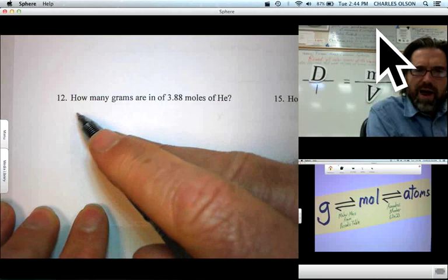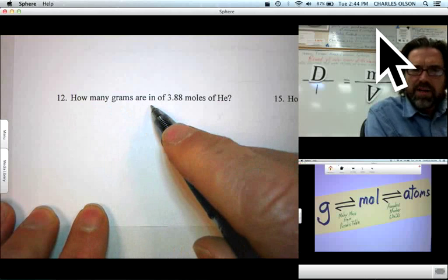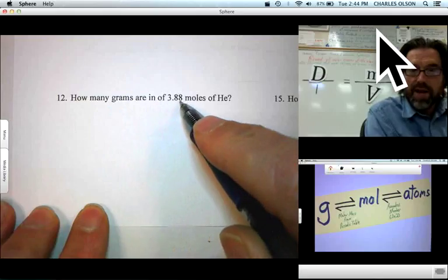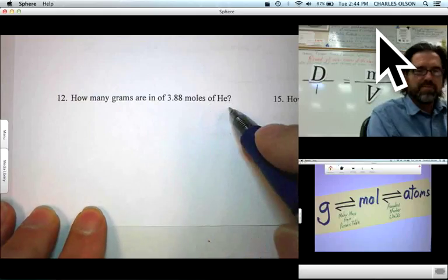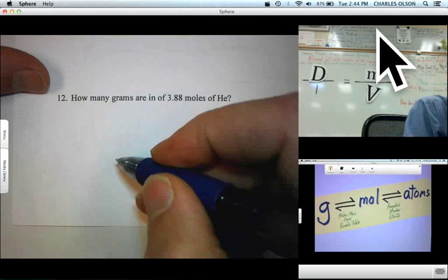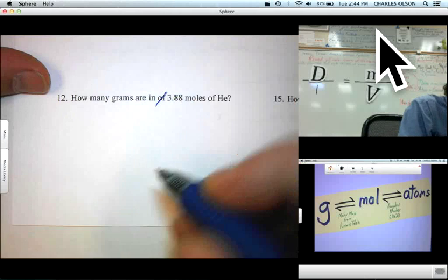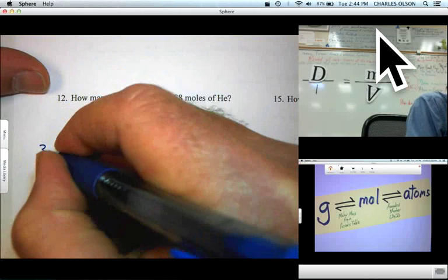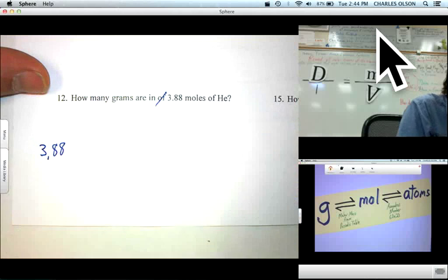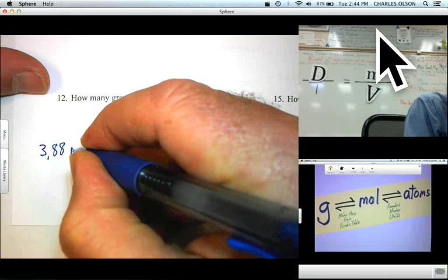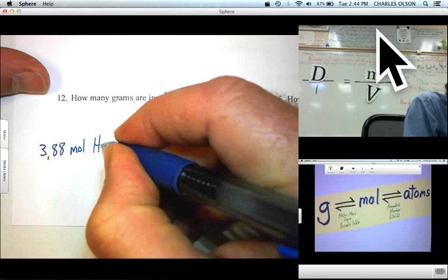Problem 12, how many grams are in 3.88 moles of helium? Well, let's start with our given. 3.88 moles of helium. There's our given.